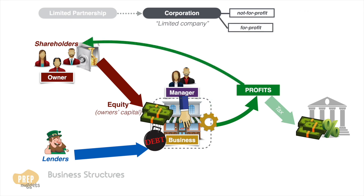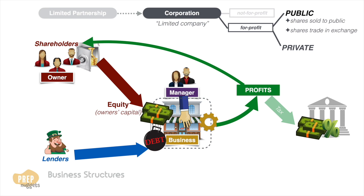For-profit corporations may be public or private. A public corporation is typically one that has shares that are sold to the public and trade in an organised market. Some countries may consider a corporation public if it has at least a designated number of shareholders, even if its shares are not traded on an exchange or in a dealer market. A for-profit corporation that does not meet these definitions is a private corporation. We'll make a more detailed comparison between public and private corporations in the next lesson.